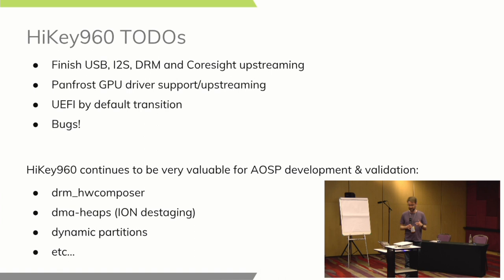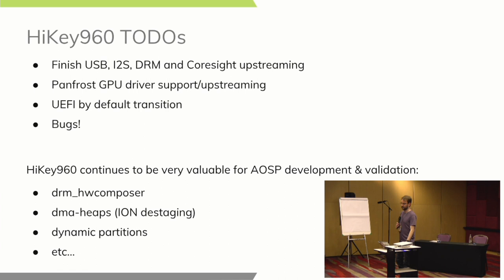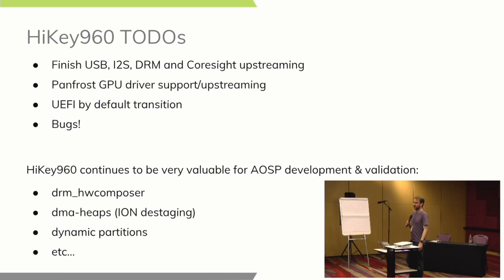We have lots of bugs, of course. HiKey 960 has still been really valuable for AOSP development — it is the test harness for the DRM hardware composer. It's the one device we have running upstream that we can use for validating and making sure no regressions sneak into the DRM hardware composer code. It's also been useful for DMA heaps and ion destaging work. Folks at Google have been using it for things like dynamic partitions and recovery work in AOSP. It's been super useful and we hope to keep it supported as long as we can.